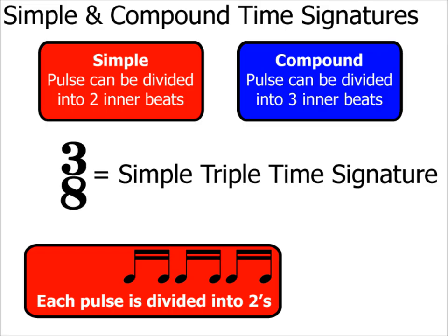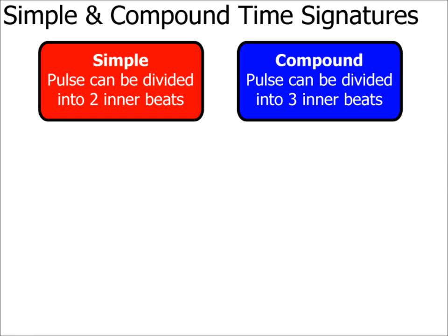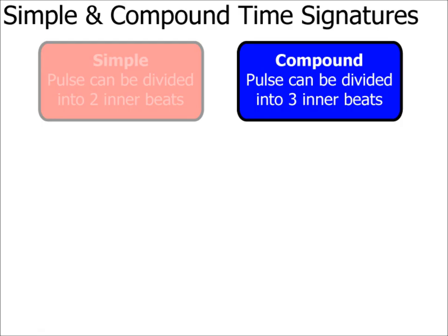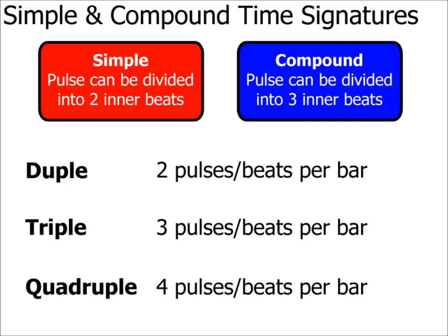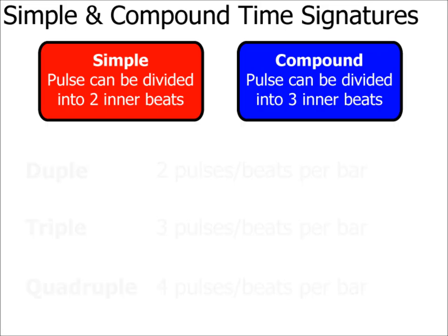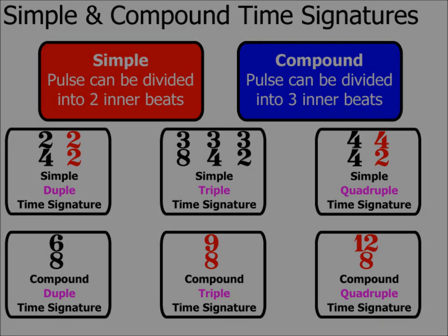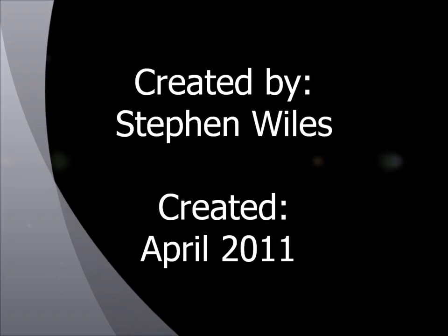3/8 is a tricky one and it's sometimes best to just learn and remember that it is simple triple rather than trying to calculate it in a music theory exam. Before we finish, a quick recap: simple — time signatures where the pulse can be split into two equal inner beats; compound — where the pulse splits into three equal inner beats; duple — two beats or pulses per bar; triple — three; quadruple — four. I've covered most common time signatures in this video. Always refer to any time signature as either simple or compound, and whether it's duple, triple or quadruple. Thanks for watching — keep watching for part three, where I'll look at some other less common time signatures.